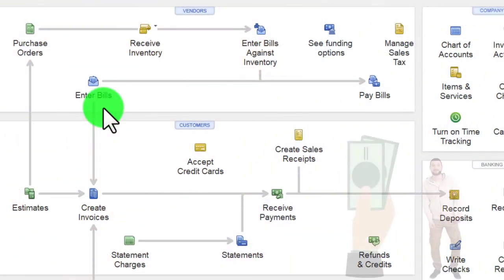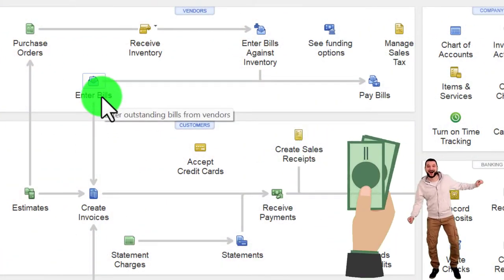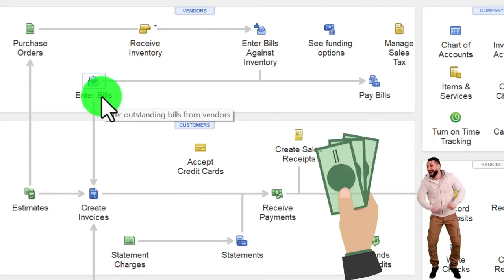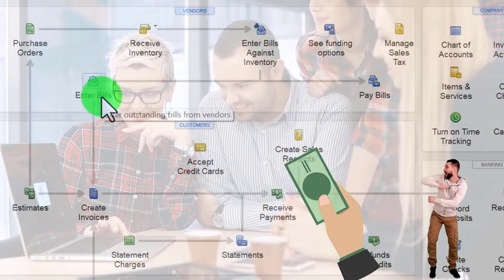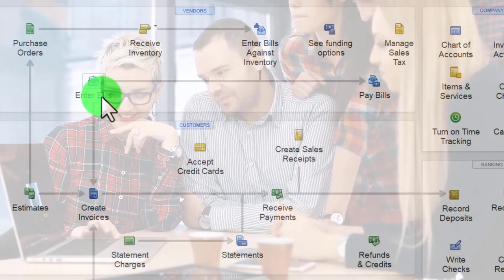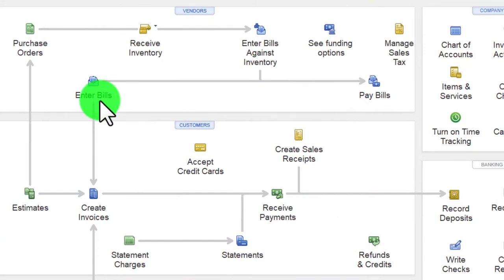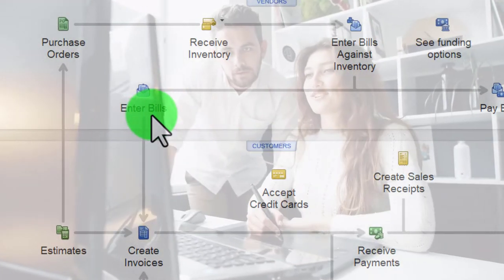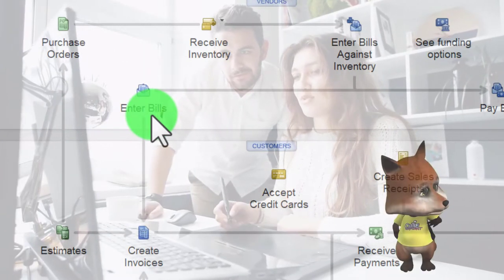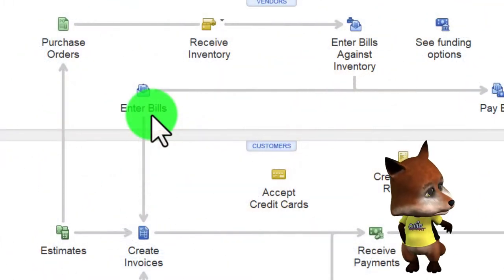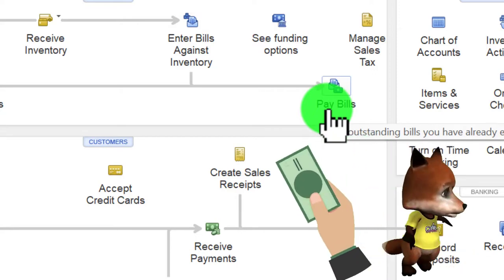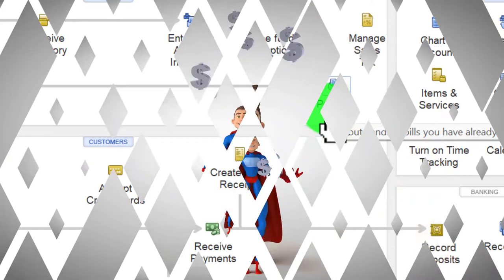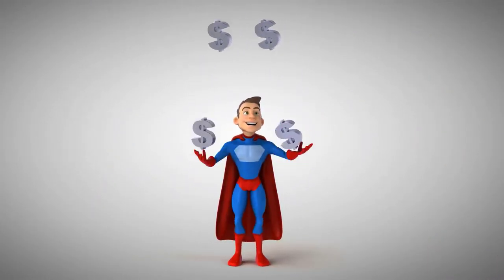If you're going to pay bills later, entering them when you receive them is also the best accrual component — for example, if you get a utility bill and wait a month to pay it, you're not recording the expense close to when you incurred it. Entering the bill when you receive it records the expense closer to the point it was incurred. It also helps to group all bills together and pay them at one time, possibly sorting and printing checks all at once.